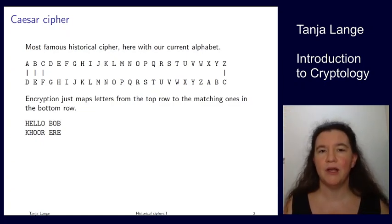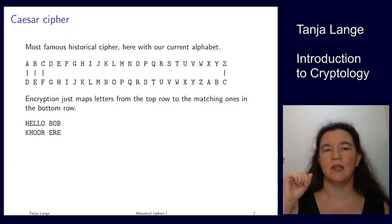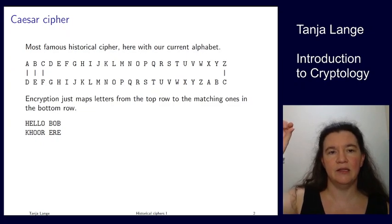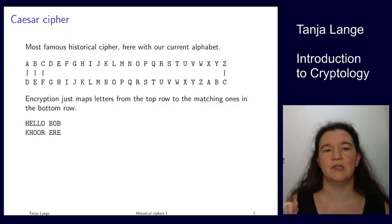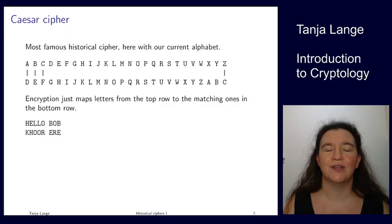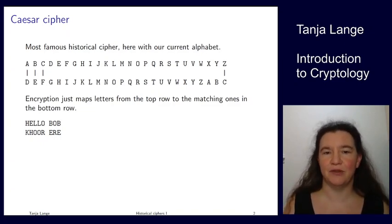So if you have 'Hello Bob', you look where H is in the top row and find K underneath it. Then E encrypts to H. So 'Hello Bob' turns into K-H-O-O-R space E-R-E. Of course he shouldn't leave spaces, because it gives away information as well, but let me keep it simple on this slide.